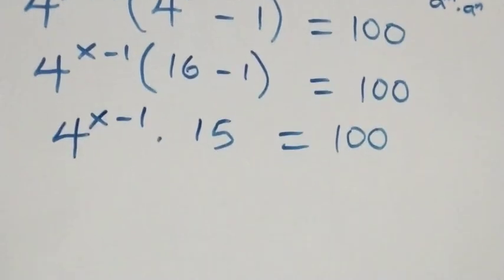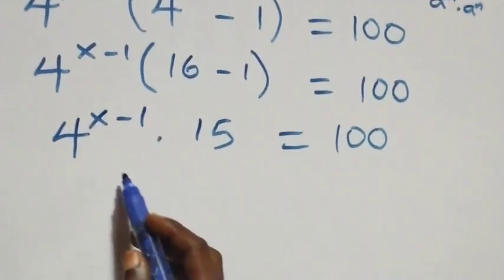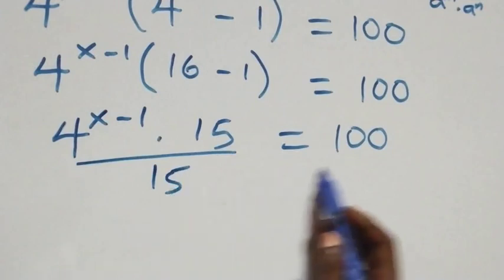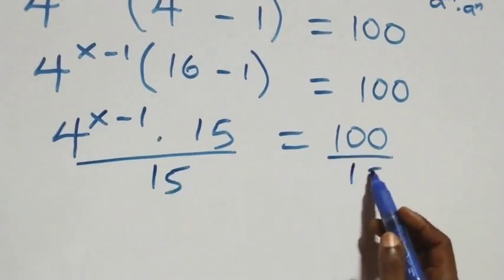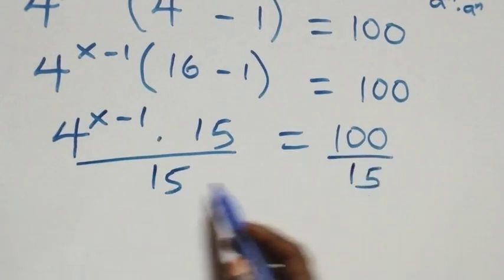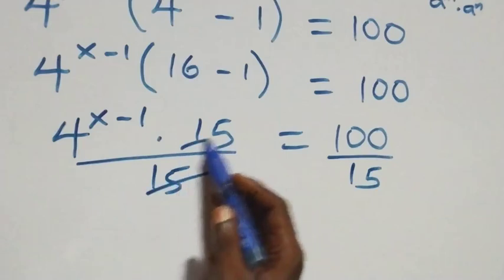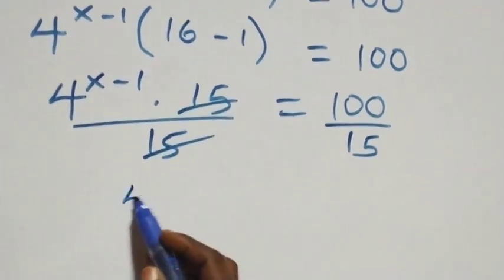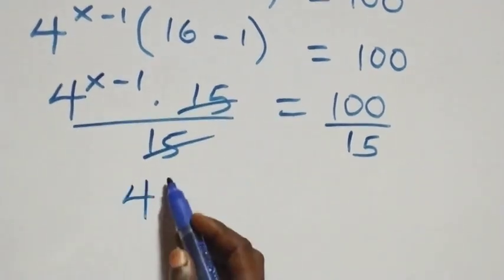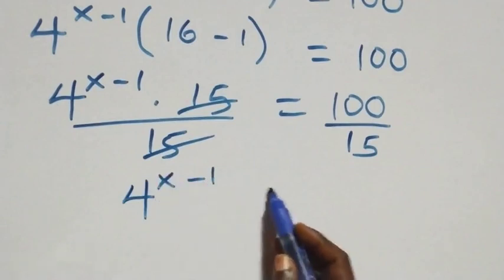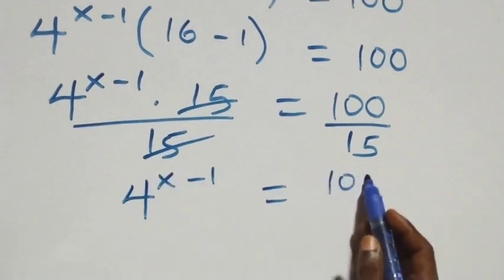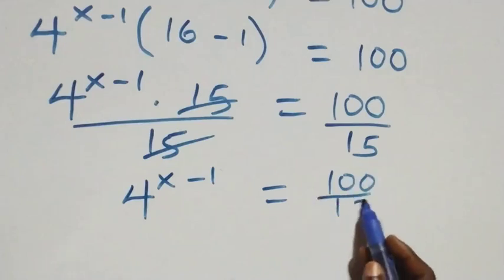The next step: we divide both sides by 15. Dividing this side by 15 and also this side by 15, the 15s cancel each other, and we have 4 raised to power x minus 1, which is equal to 100 over 15.